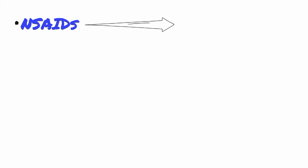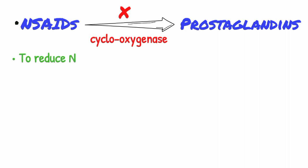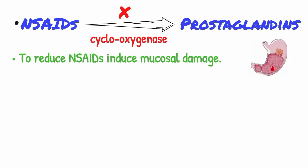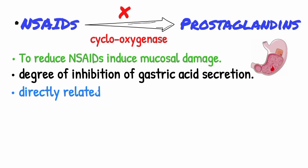Since non-steroidal anti-inflammatory drugs reduce prostaglandin formation by inhibiting the cyclooxygenase enzyme, synthetic prostaglandin analogs offer a logical approach to reduce acid-induced mucosal damage. The degree of inhibition of gastric acid secretion by misoprostol is directly related to dose.